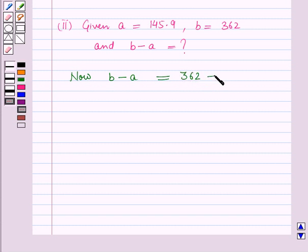Here you can see that there is only one digit in the decimal part of 145.9, so we will put 0 in the decimal part of 362.